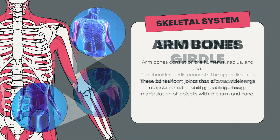These bones form joints that allow a wide range of motion and flexibility, enabling precise manipulation of objects with the arm and hand. The hand bones consist of the carpals, metacarpals, and phalanges.